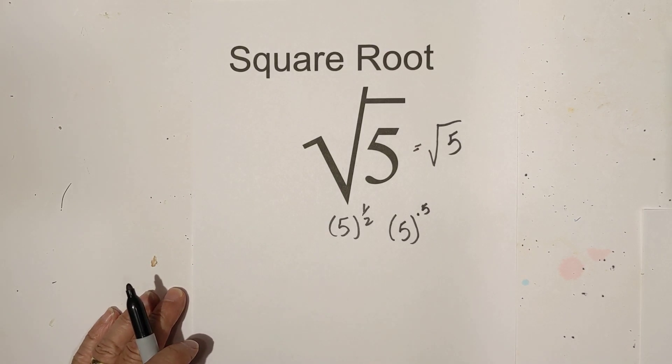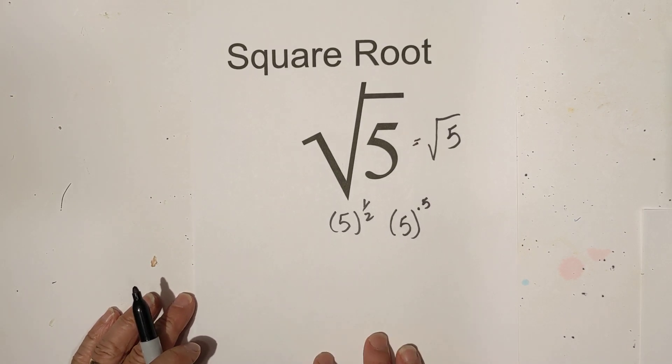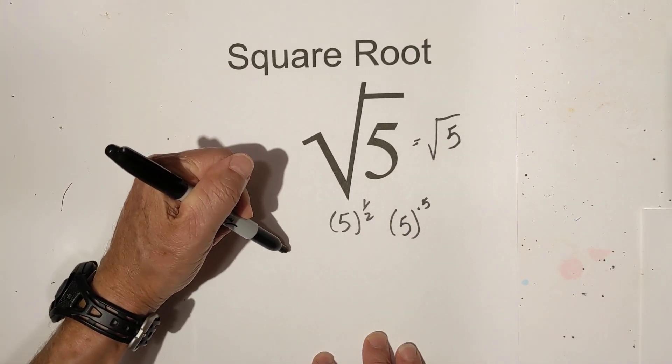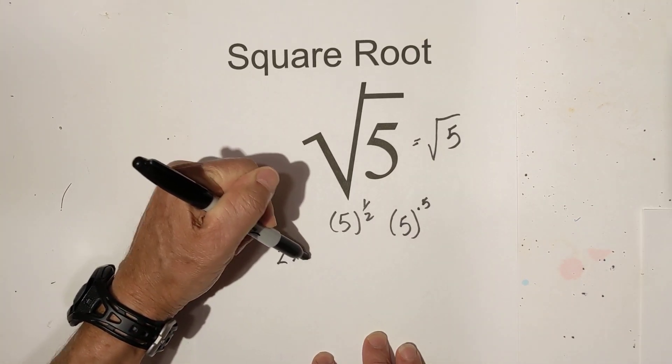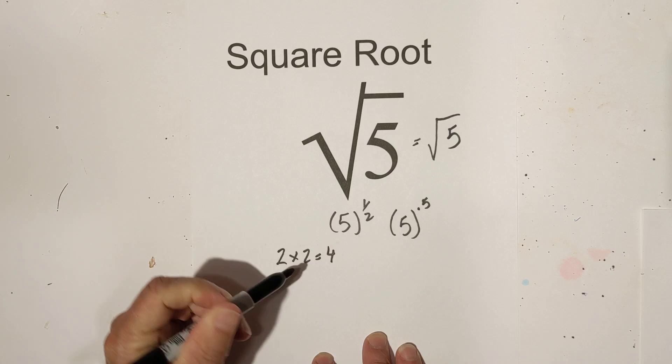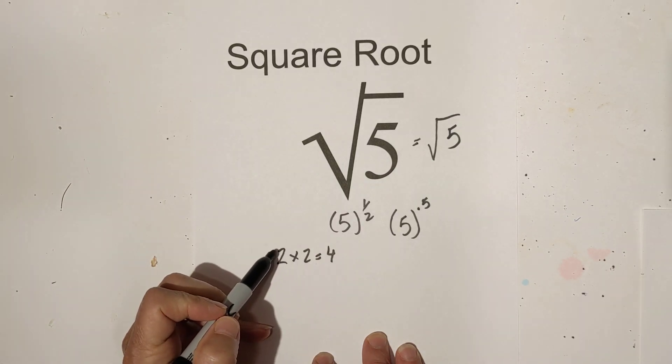You can get the decimal form of the square root of 5. Basically, if you have 2 times 2, that equals 4. So the square root of 4 is 2.